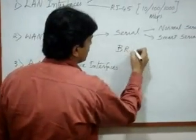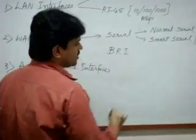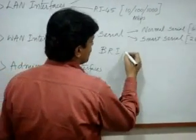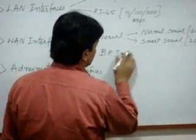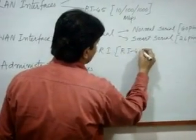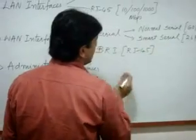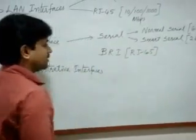There is also a BRI — Basic Rate Interface — which is basically for ISDN lines. This BRI uses an RJ45 port for ISDN connectivity.